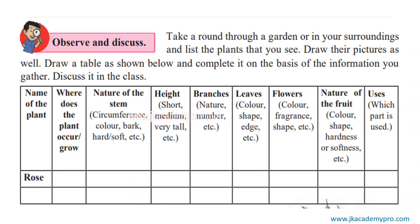Here is an activity for you to do — Observe and Discuss. Take a round through a garden or in the surroundings and list the plants that you see. You can even draw pictures of some of the plants, the flowers, and various things that you see. Then you can draw a table and, as shown below, make entries for all these things — that is, the name of the plant and where the plant grows or where you saw it.